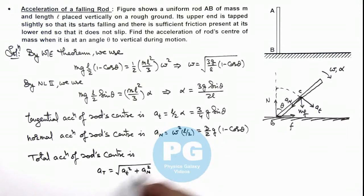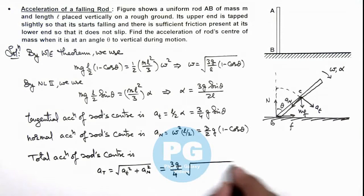the final result you'll get is (3g/4) multiplied by the square root of...